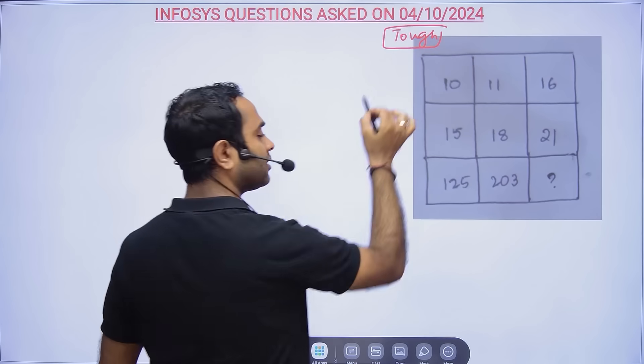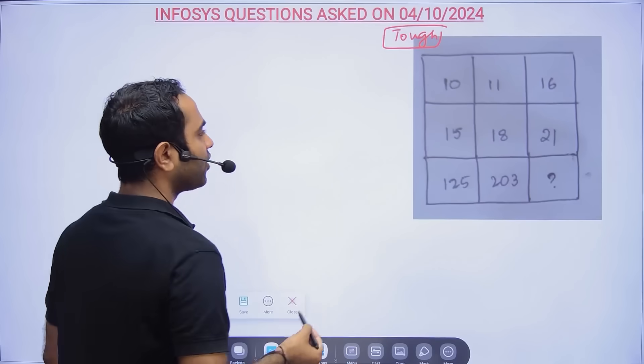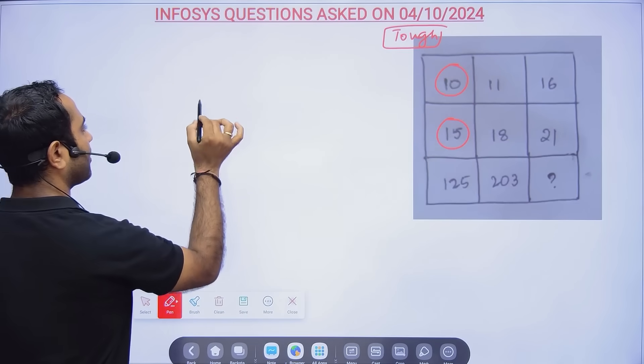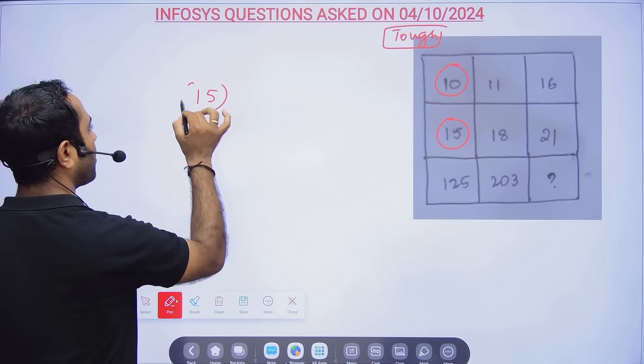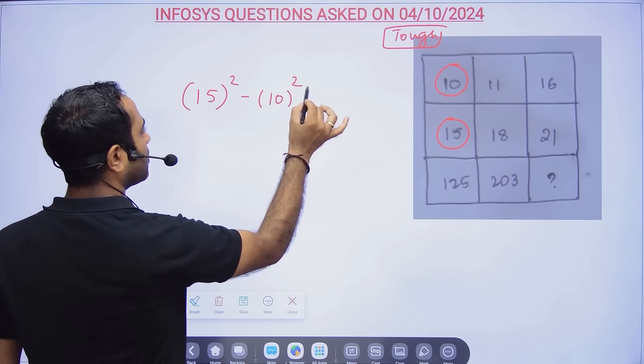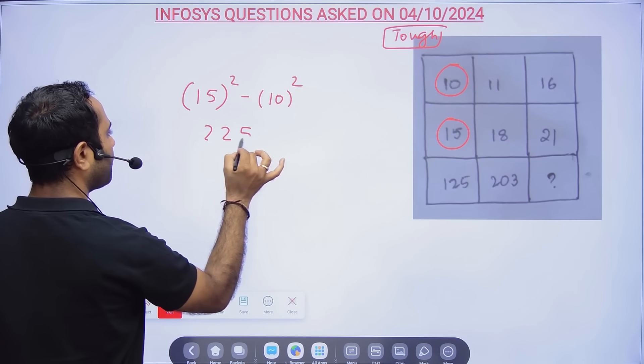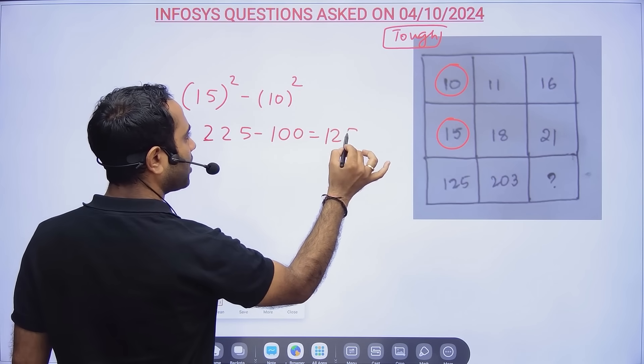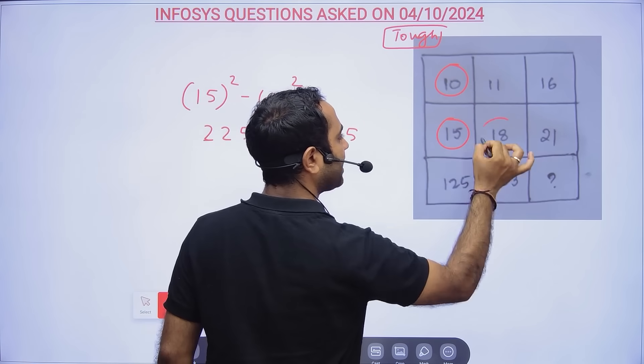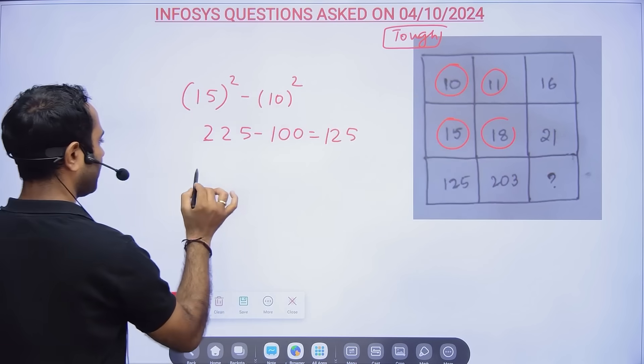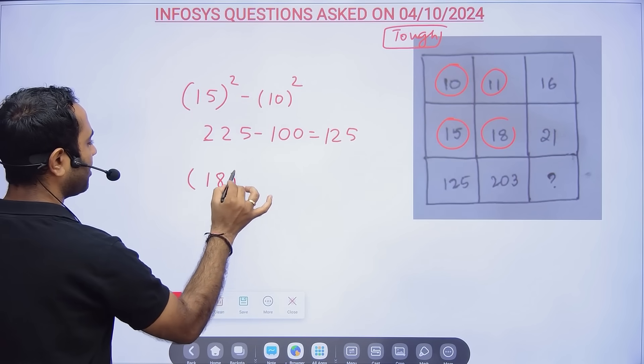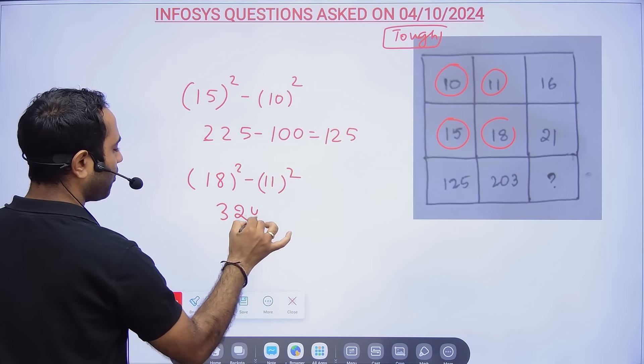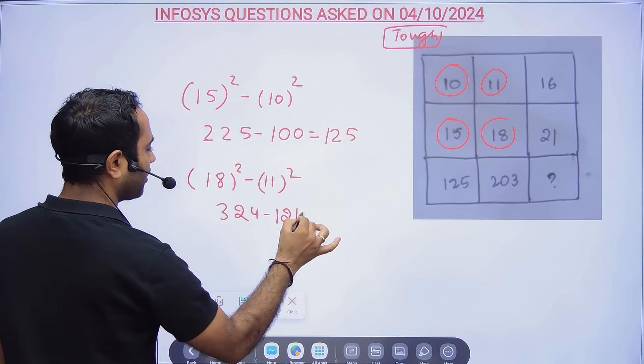Here 15² = 225 and 10² = 100, so 15² - 10² = 225 - 100 = 125. Then 18² and minus 11²: 18² = 324 and 11² = 121, so 324 - 121 = 203.